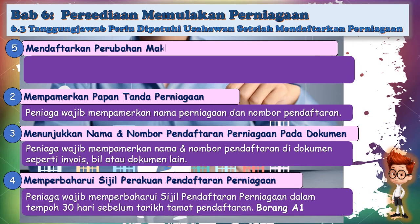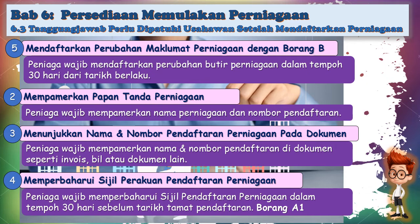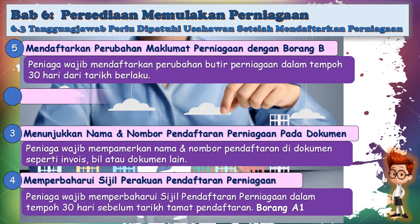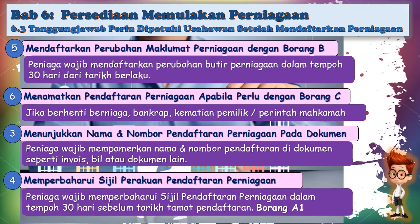Yang kelima, usahawan perlu mendaftarkan perubahan maklumat perniagaan menggunakan borang B. Peniaga wajib mendaftarkan perubahan butiran perniagaan, sama ada dari segi alamat, adanya cawangan baru, ataupun perubahan pemilik dalam tempoh 30 hari dari tarikh berlaku. Yang keenam, usahawan perlu menamatkan pendaftaran perniagaan apabila perlu menggunakan borang C — jika usahawan berhenti berniaga, menghadapi muflis atau bankrap, kematian pemilik, ataupun arahan daripada mahkamah.